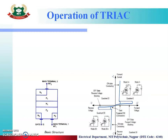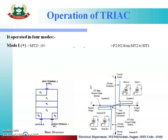Now we see the operation of TRIAC. It operates in four modes. This is the structural diagram — the basic structure of TRIAC. The upper terminal is main terminal 2 and the lower one is the MT1 terminal. The gate terminal is always nearer to the MT1 terminal.